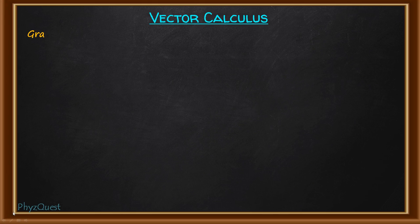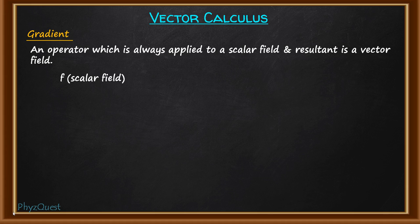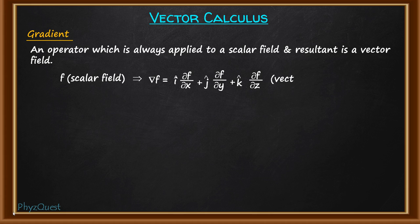Gradient is always applied to a scalar field and the resultant will be a vector field. Suppose f is a scalar field. When the del operator is applied to it, that produces the gradient of f. The definition is: i-cap ∂f/∂x plus j-cap ∂f/∂y plus k-cap ∂f/∂z. This is the expression of gradient of a scalar field and it is a vector quantity.